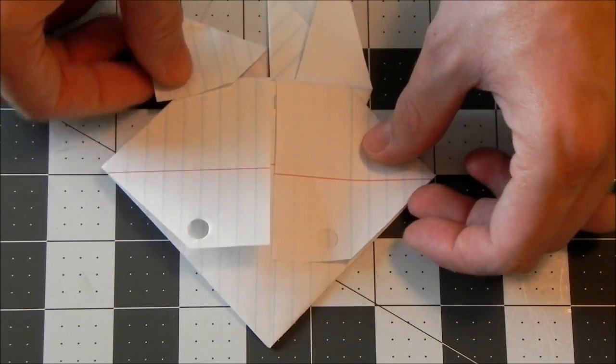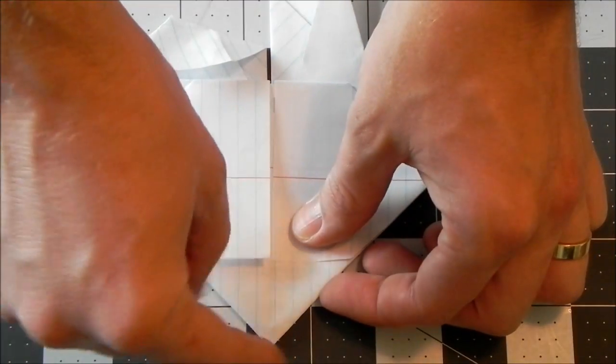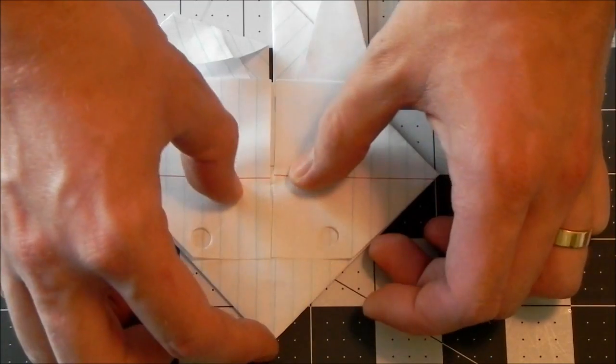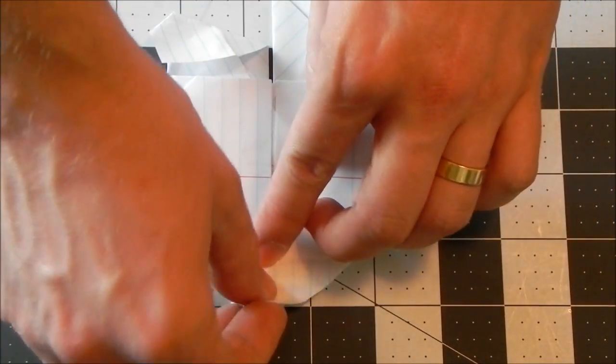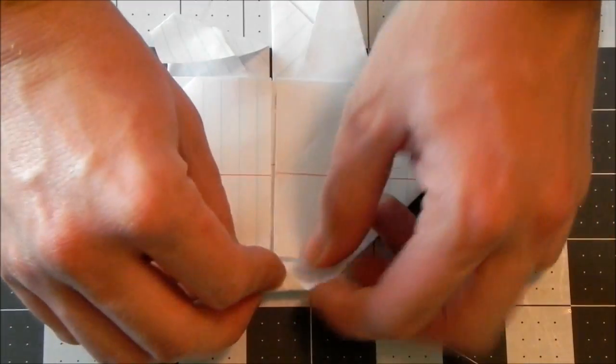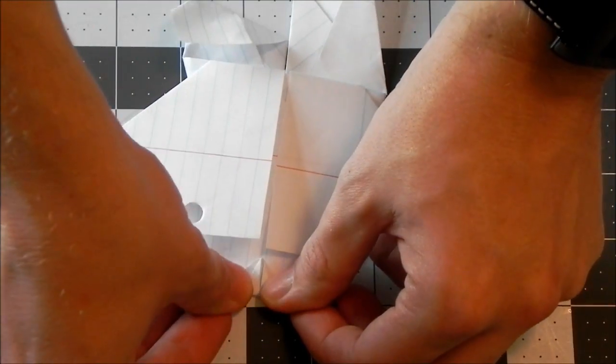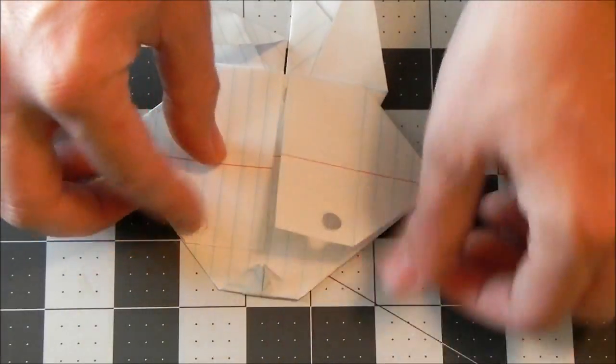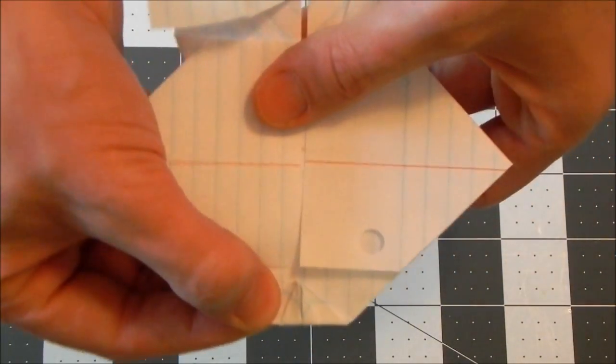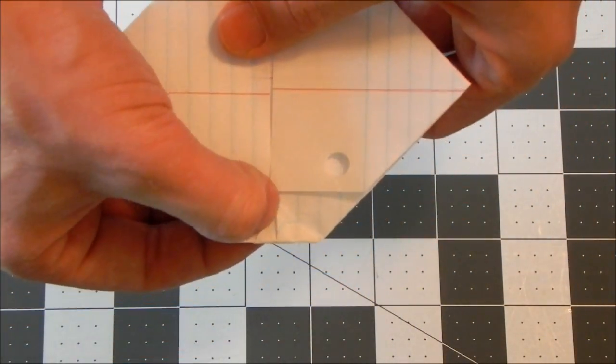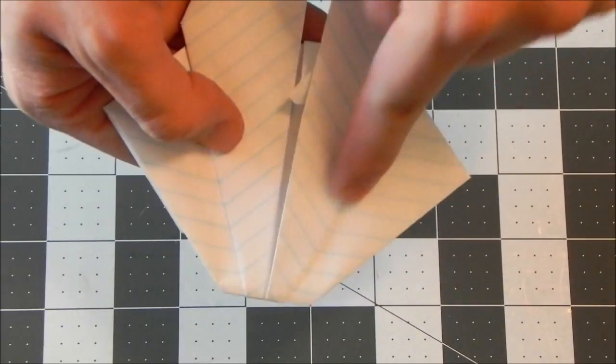And the last thing that we need to do for this rabbit is make the teeth. So we're going to take the point down here below the eyes and we'll just fold it up to meet the lower part of the face. Just like that.